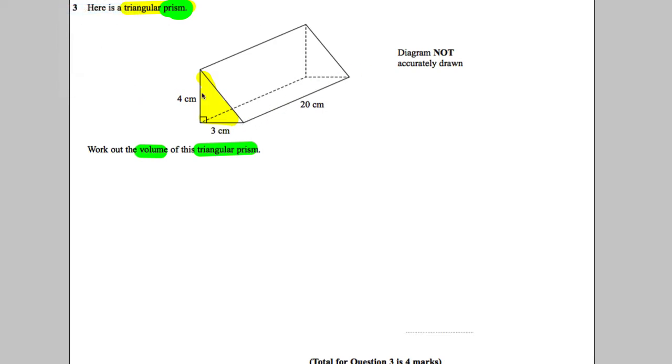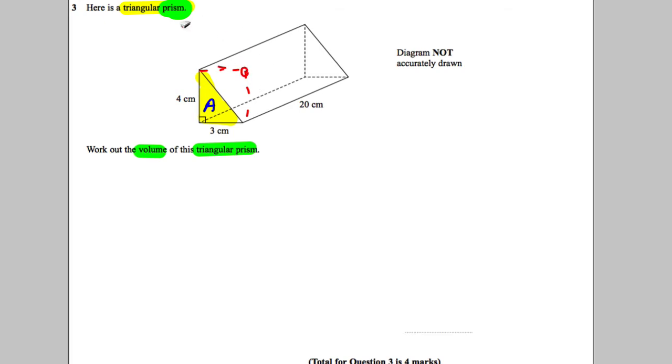So let's work out the area of triangle A. Now the area of a triangle is always half of a rectangle. You can imagine that if I extended that to be a rectangle, you can see that the area of the yellow is half a rectangle. So this is how you would work out the area of A. You would say the area of A is the base times the height, so it's 3 multiplied by 4, and then you half it, which is going to be 6 centimeters squared.